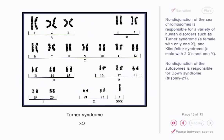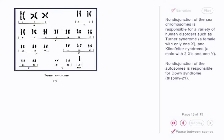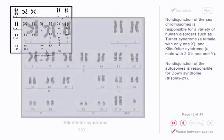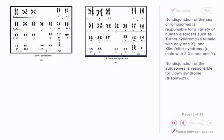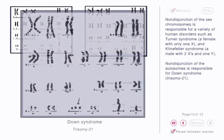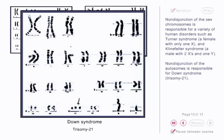Non-disjunction of the sex chromosomes is responsible for a variety of human disorders, such as Turner syndrome — a female with only one X — and Klinefelter syndrome — a male with two X's and one Y. Non-disjunction of the autosomes is responsible for Down syndrome, trisomy 21.